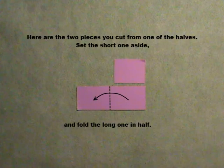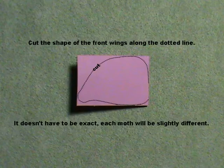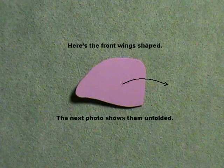Here are the two pieces you cut from one of the halves. Set the short one aside and fold the long one in half. Cut the shape of the front wings along the dotted line. It doesn't have to be exact. Each moth will be slightly different. Here's the front wing shaped. The next photo shows them unfolded.